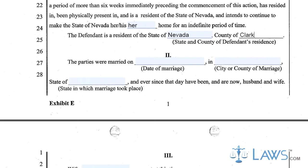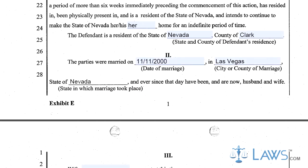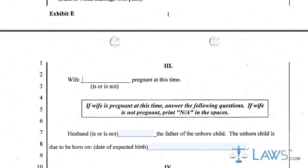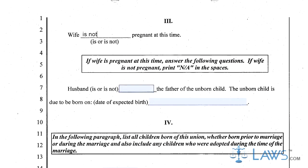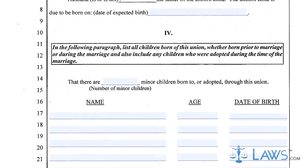In Section 2, enter the date of marriage and the county and state where the ceremony was executed. Step 3: In Section 3, indicate whether the wife is pregnant. If so, note whether the father is the husband or another man.